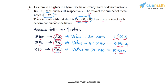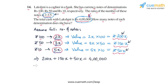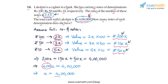Now we use the fact that the total value of these notes should be 4 lakhs. So 200x + 150x + 50x = 4 lakhs. On the left-hand side, 200 + 150 + 50 gives us 400, so we get 400x = 4 lakhs. Dividing both sides by 400 to solve for x, we get x = 4 lakh ÷ 400.